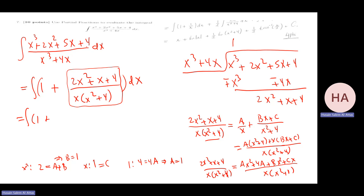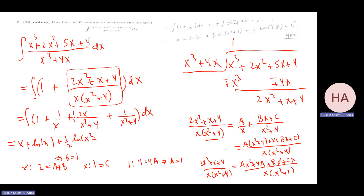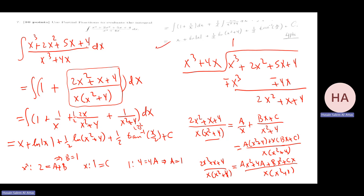Integrating term by term: x + ln|x| + half·ln(x squared + 4) — no absolute value needed since it's always positive. For the last term, since the denominator is x squared + 2 squared, we get half·arctan(x/2) + C, which is correct.